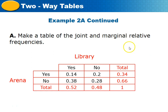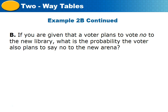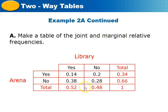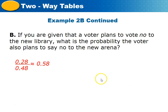Part B asks: given that a voter plans to vote no to the new library, what is the probability the voter also plans to vote no to the new arena? The total 'no' votes for the library is 0.48 — that goes in the denominator. The 'no' to both library and arena is 0.28 — that's the numerator. Dividing 0.28 by 0.48 gives 0.58, or 58%.